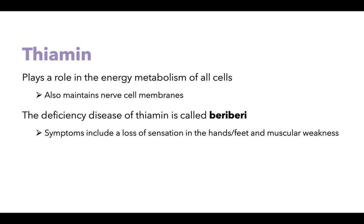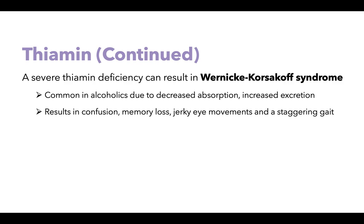The first individual B vitamin is thiamine. Thiamine plays a role in the energy metabolism of all cells and helps to maintain nerve cell membranes. The deficiency disease of thiamine is called beriberi, and symptoms include loss of sensation in the hands and feet and muscular weakness. A severe thiamine deficiency can result in Wernicke-Korsakoff syndrome, which is common in alcoholics due to decreased absorption and increased excretion of thiamine. It results in confusion, memory loss, jerky eye movements, and a staggering gait, and in some instances can be irreversible.